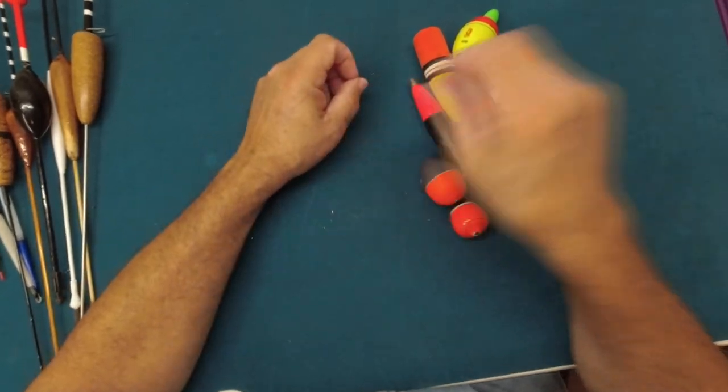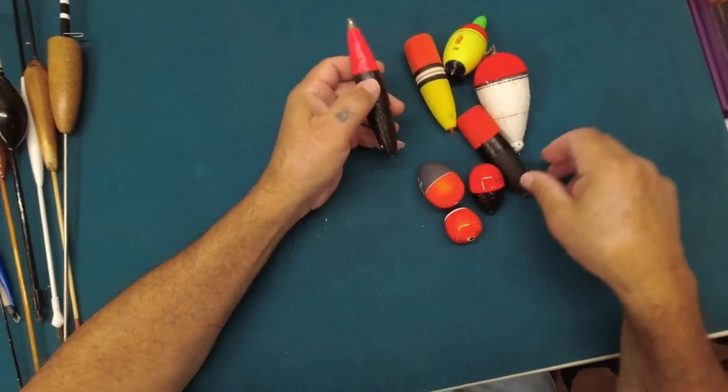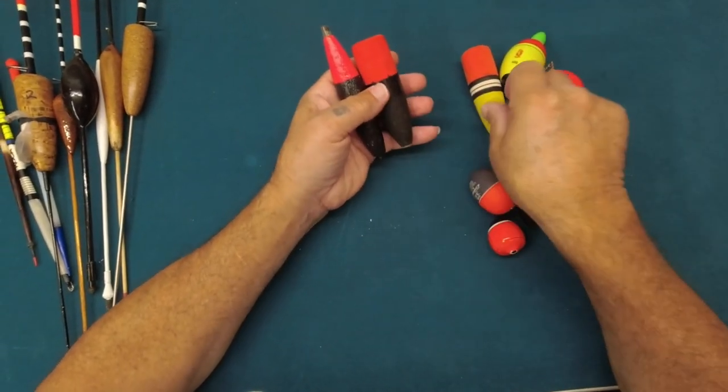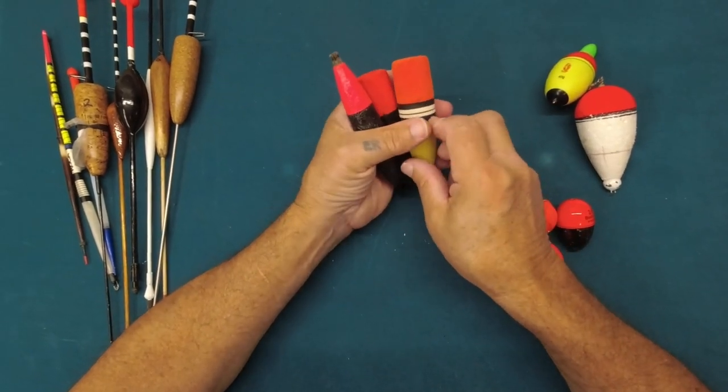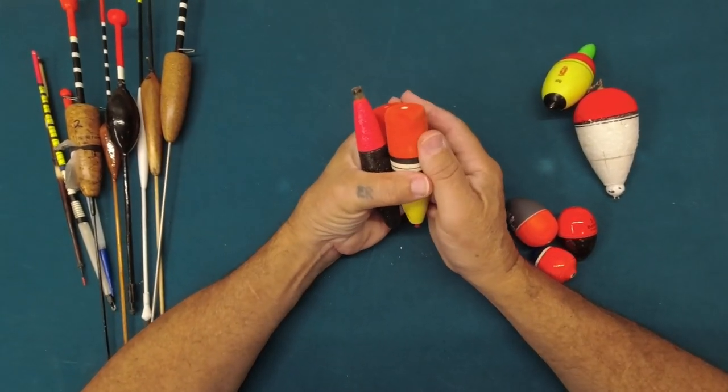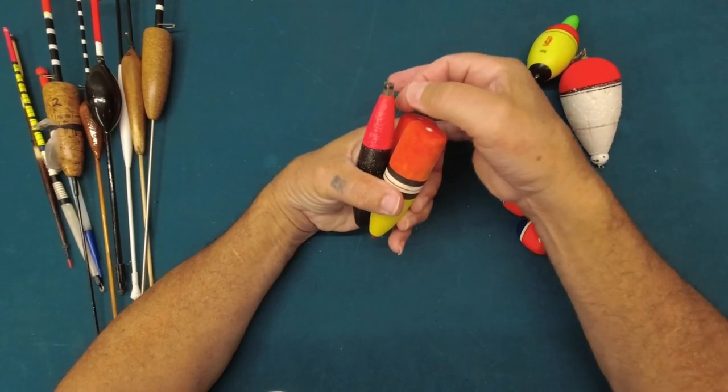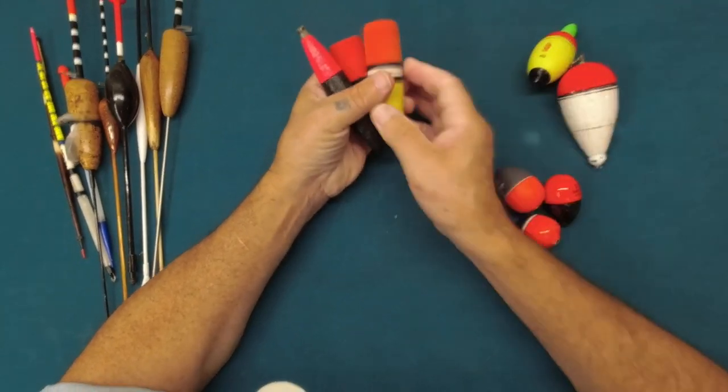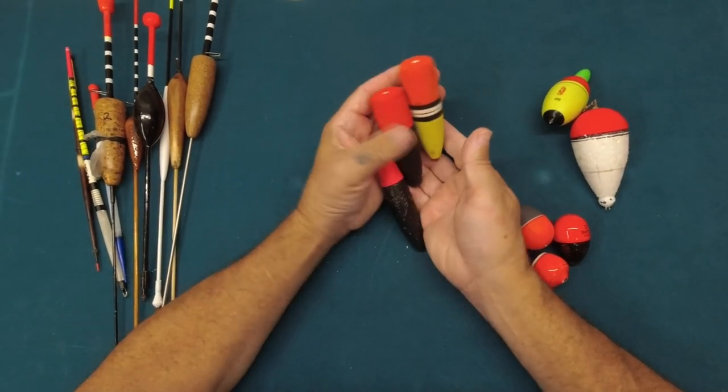Now we move on to the so-called bobby corks. These floats here I used to do a lot of live bait fishing off the rocks. Haven't done that for quite a while actually, and those are the floats I used to use, these ones here.